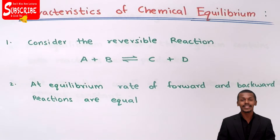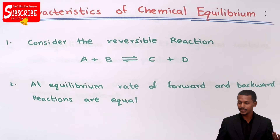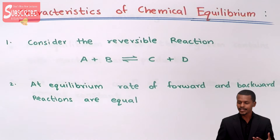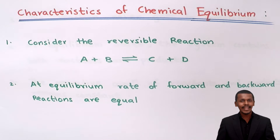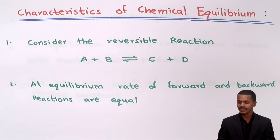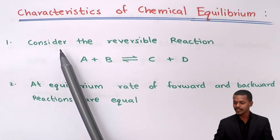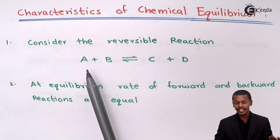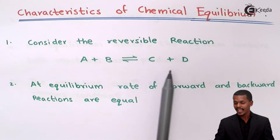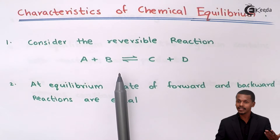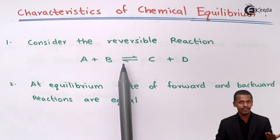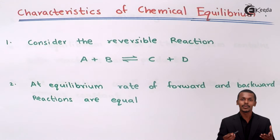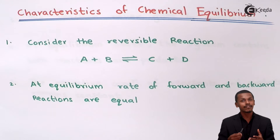Let us understand the characteristics of chemical equilibrium. We have represented a general reversible reaction: A plus B giving us C plus D. The double-headed reverse arrows indicate that this is a reversible reaction.